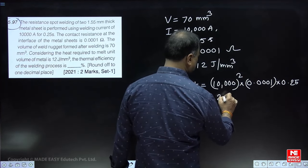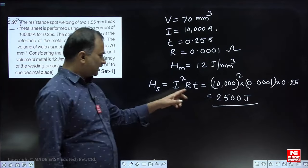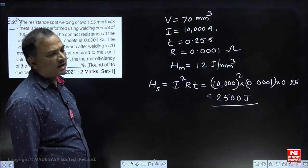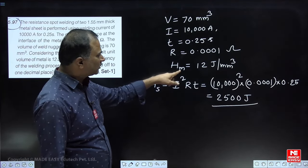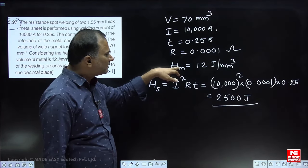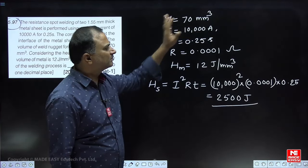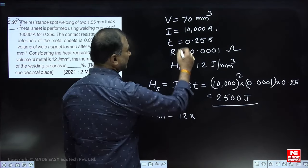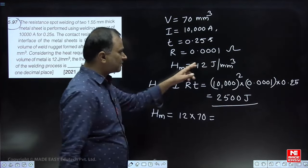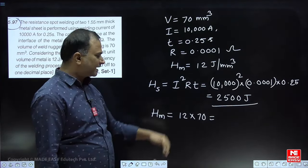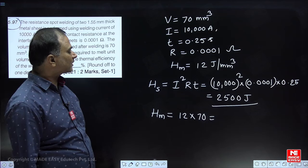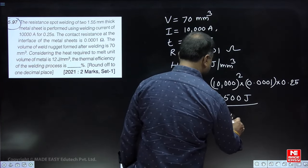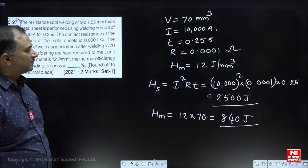Heat supplied is calculated using Joule's law: Q = I²·R·t = (10,000)² × 0.0001 × 0.25 = 2500 joules. Heat required to melt per unit volume is 12 J/mm³. Heat required to melt the nugget = 12 × 70 = 840 joules.